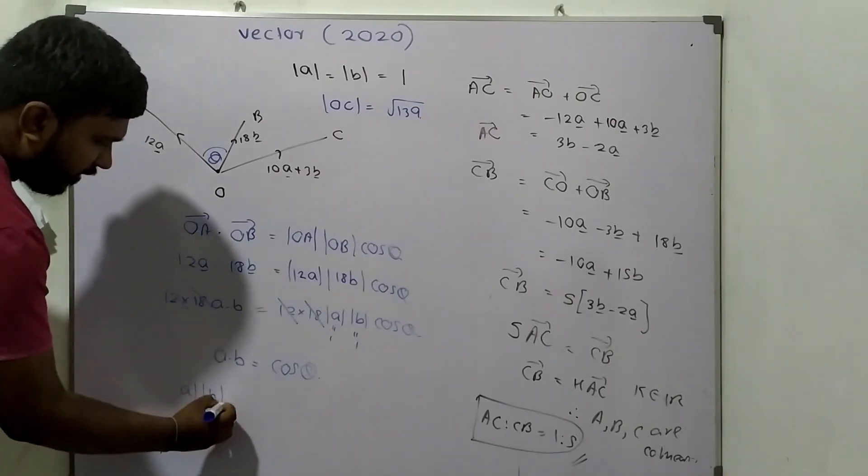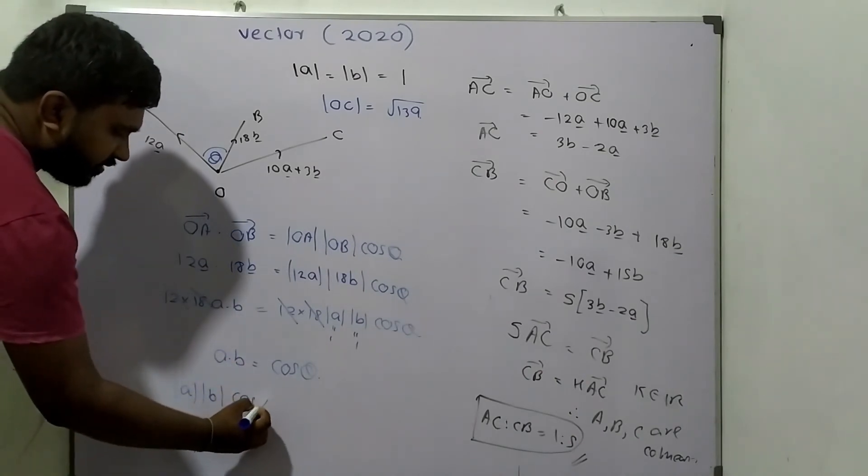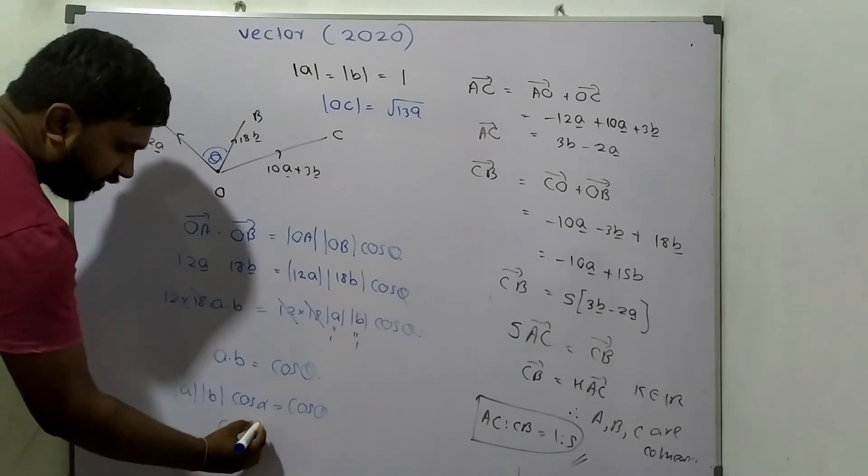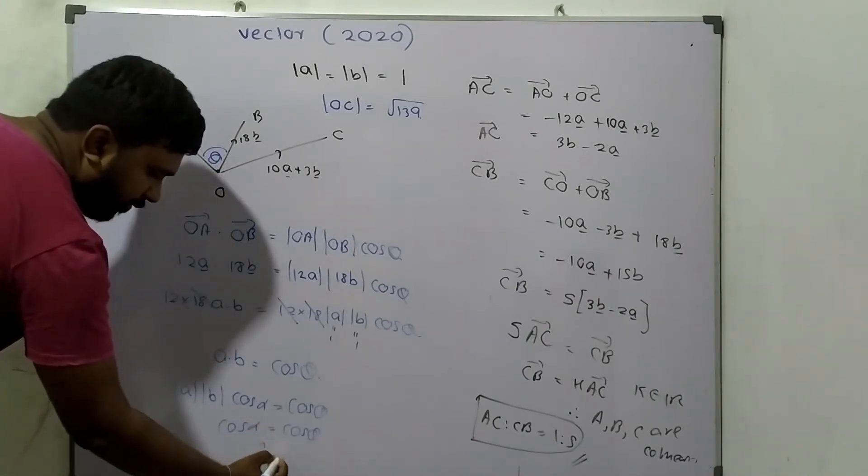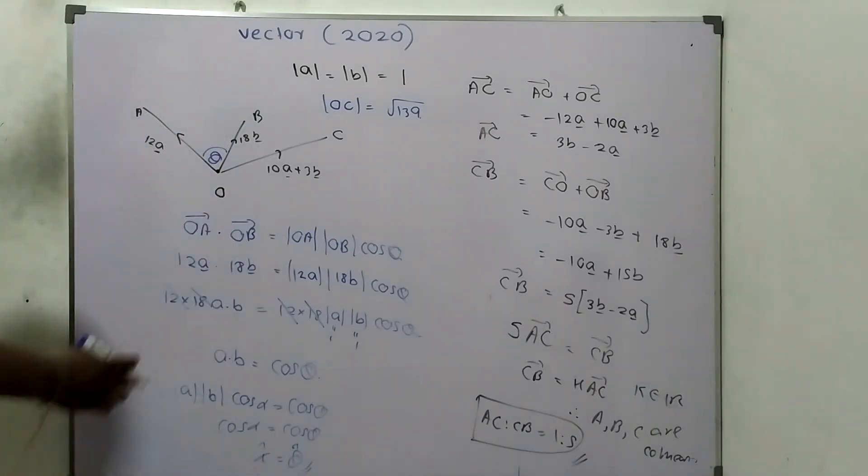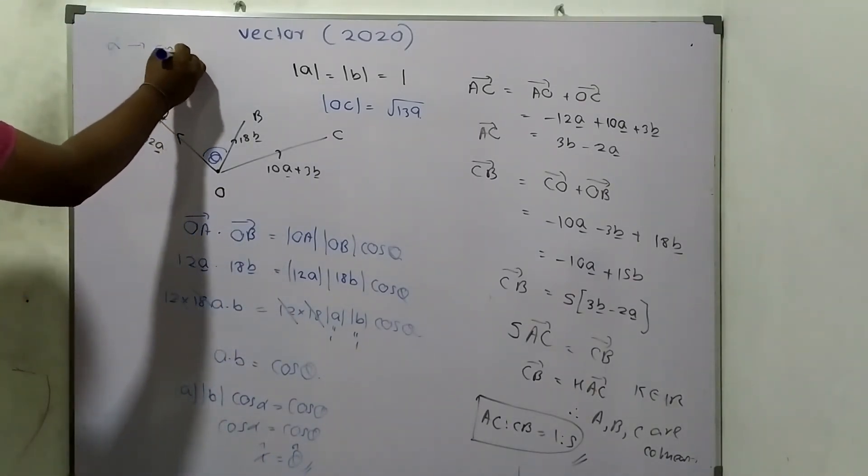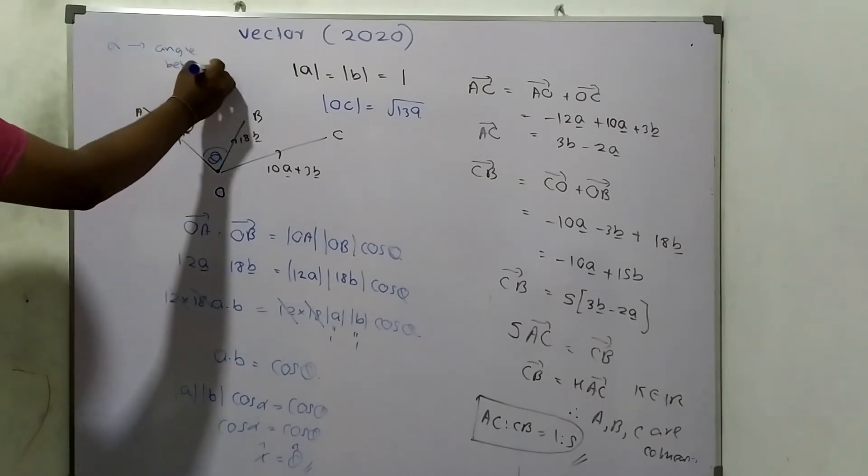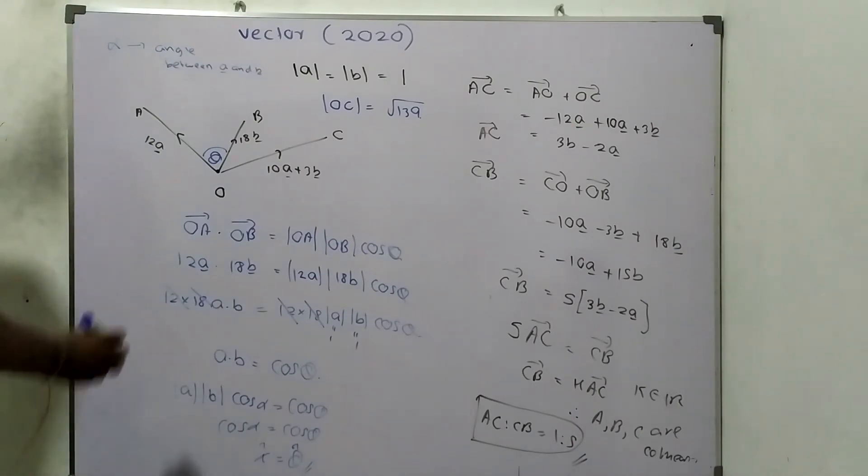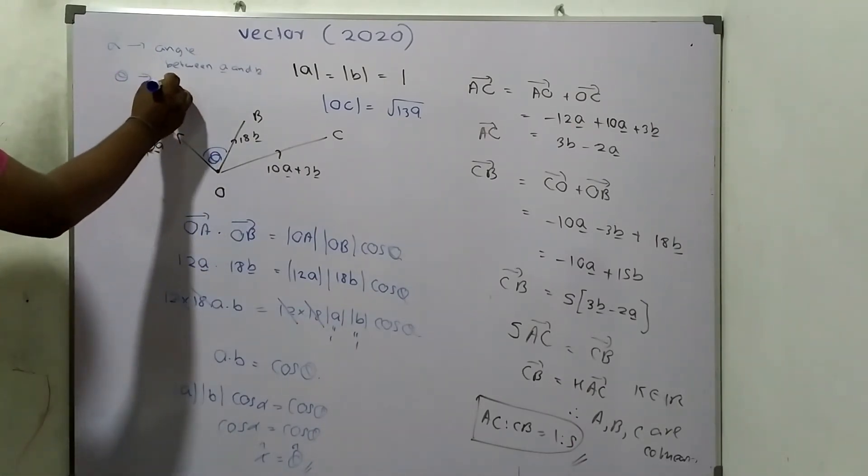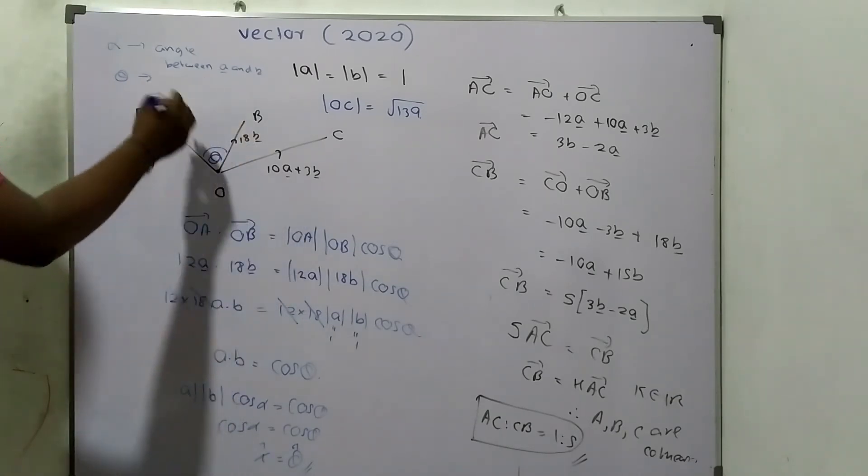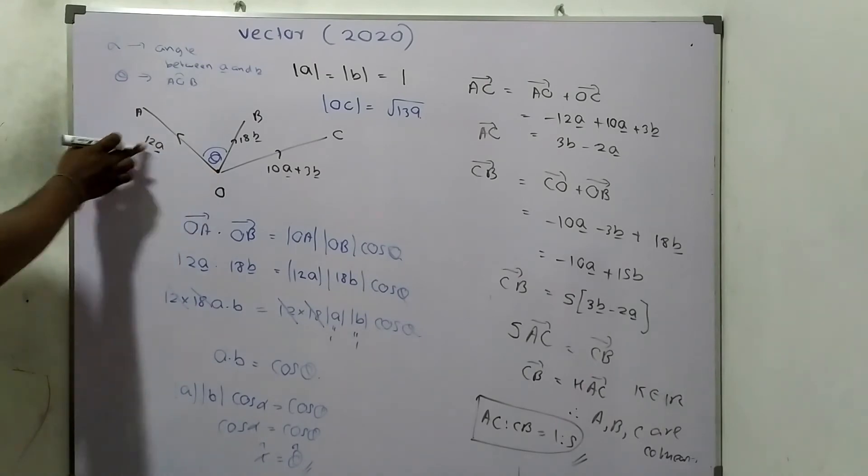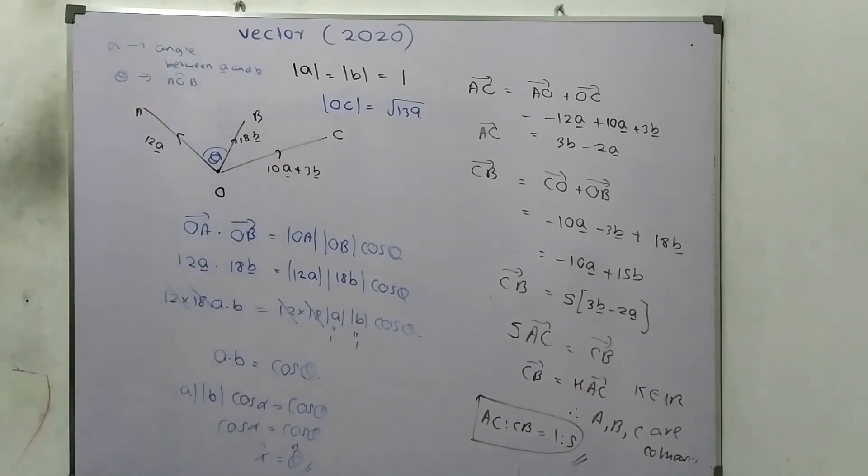Modulus A, modulus B, angle between A and B - assume this is alpha. So cos alpha equals cos theta, therefore alpha equals theta. This alpha means angle between A and B. Now theta means angle between O and A, actually angle AOB. It's true because 12A and 18B are the same, the difference is just the constants. We need angle AOB.